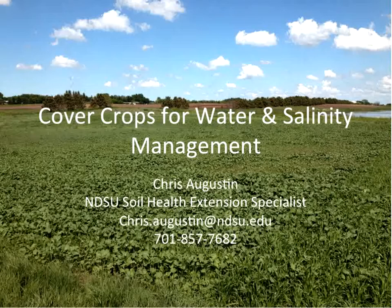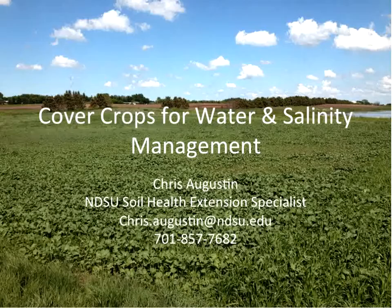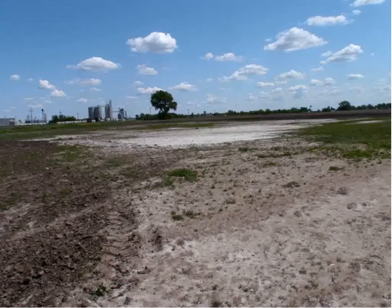Chris will talk about cover crops and how they can be used for managing water as well as salinity. About 5.8 million acres of North Dakota — roughly the size of Vermont — are adversely affected by soil salinity. Managing saline areas comes down to managing the water. One tool available from NDSU is NDAWN, the North Dakota Agricultural Weather Network, which has weather stations in every county and a tool that estimates crop water use. Chris will cover full-season and late-season cover crop water use.